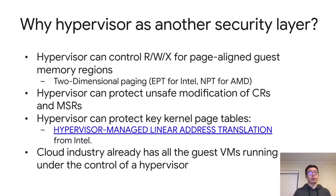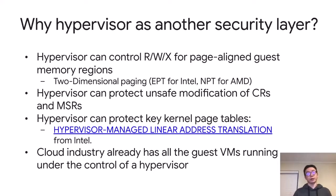The hypervisor has almost one-to-one mappings to all the protections we want to achieve. Hypervisor can control read, write, and execute bits for page-aligned guest memory regions. Utilizing two-dimensional paging like EPT (Intel) or NPT (AMD), we can set up permissions that the guest can never change. The hypervisor can also protect against unsafe modifications of control registers and MSRs — we configure VM exits on writes to those MSRs or control registers and then double-check whether the operation is legitimate.